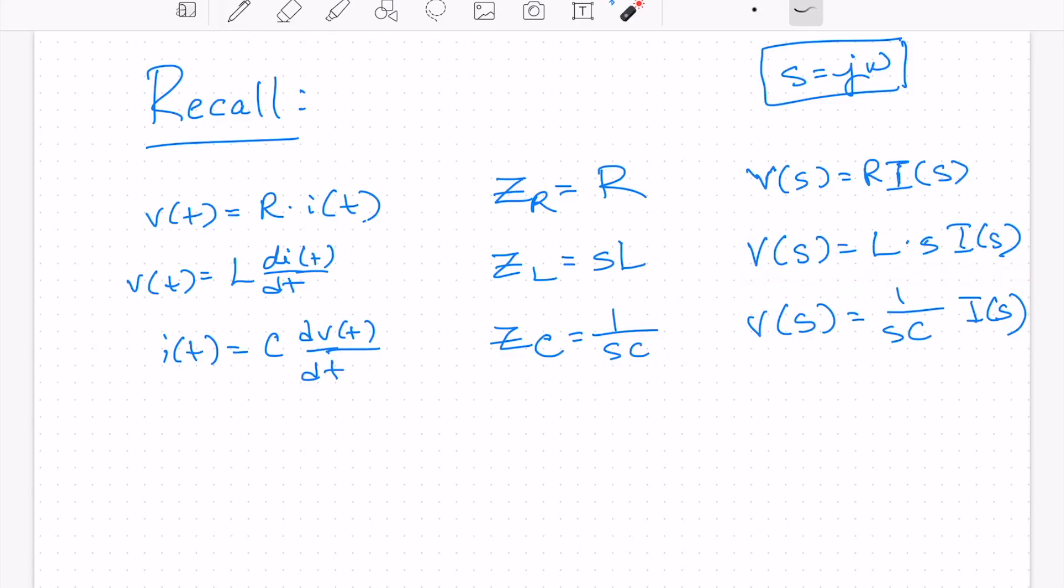And so we have the impedance of an inductor is SL. So now we have V is equal to ZL times I. So we can write that as a generalized Ohm's law or a generalization of Ohm's law as V is equal to I times Z, where Z is impedance.